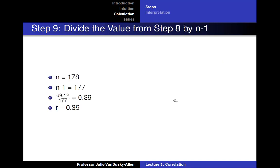Then you divide the value from step 8 by the number of observations minus 1, or 178 minus 1, which is 177. 69.12 divided by 177 is 0.39. This gives you a correlation coefficient of 0.39.